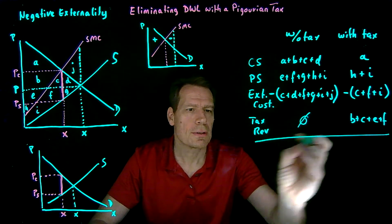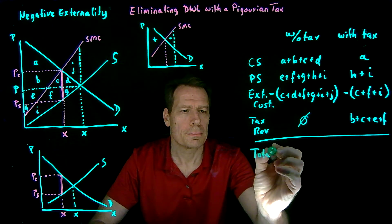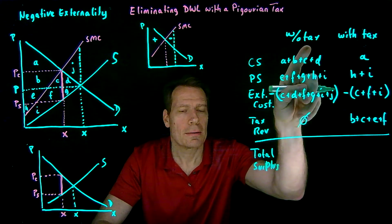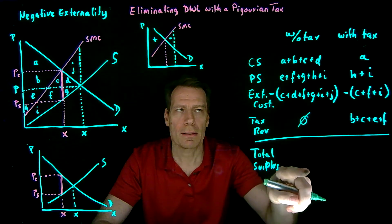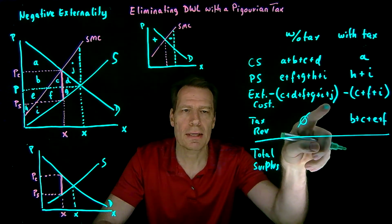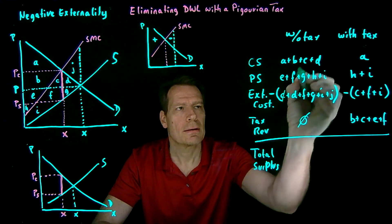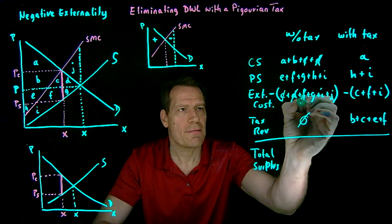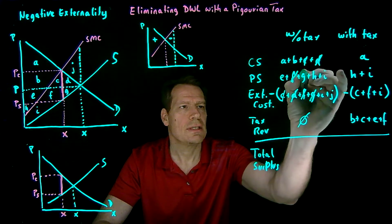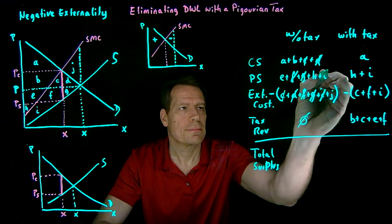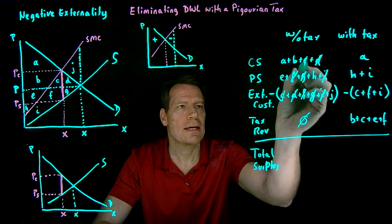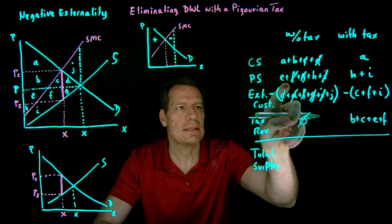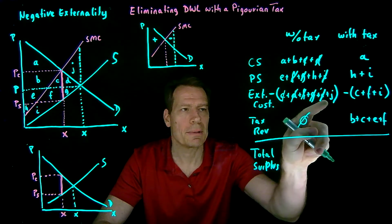We can now sum all of this to get total surplus. So before the tax is imposed, we can sum this column. And we've got a bunch of negative terms here that we can cancel. So we've got a negative C and a C, a negative D and a D, a negative F and an F, a negative G, a negative I, and a negative J that doesn't appear anywhere up here.